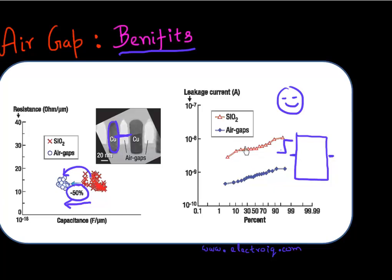So this is the leakage current which I get if I don't have an air gap, if I just have silicon dioxide versus if I have an air gap. I see orders of magnitude reduction in my leakage current. And that would mean essentially better reliability. So I'm quite happy about this air gap.